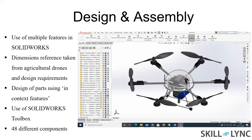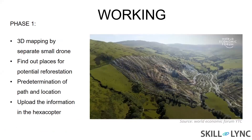The working of this drone is in two phases. In the first phase, a small drone scans the geographic location and creates a 3D map. Then software such as GIS software or QGIS can segregate the areas of potential reforestation — wherever there is barren land or wherever reforestation is required — and the path planning is done by the software and uploaded to the hexacopter.